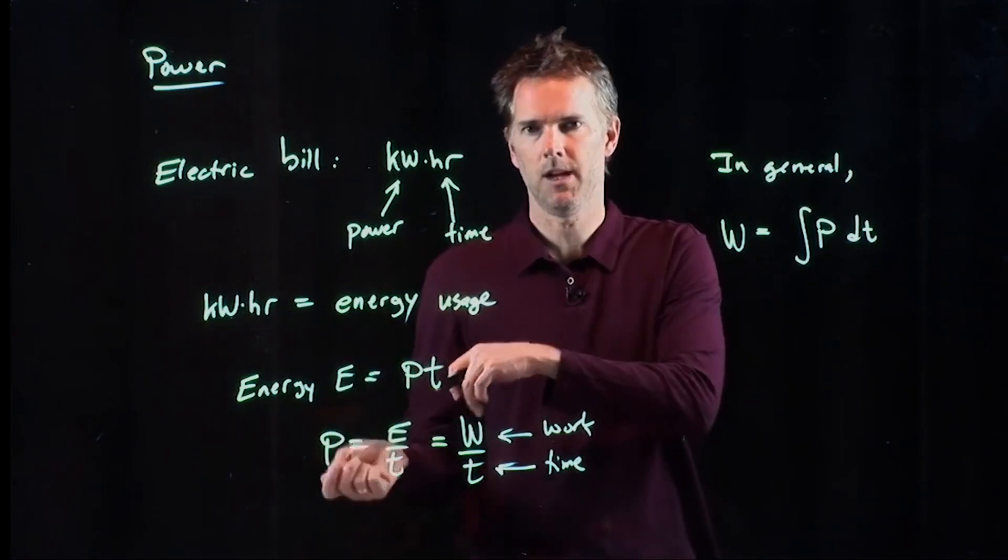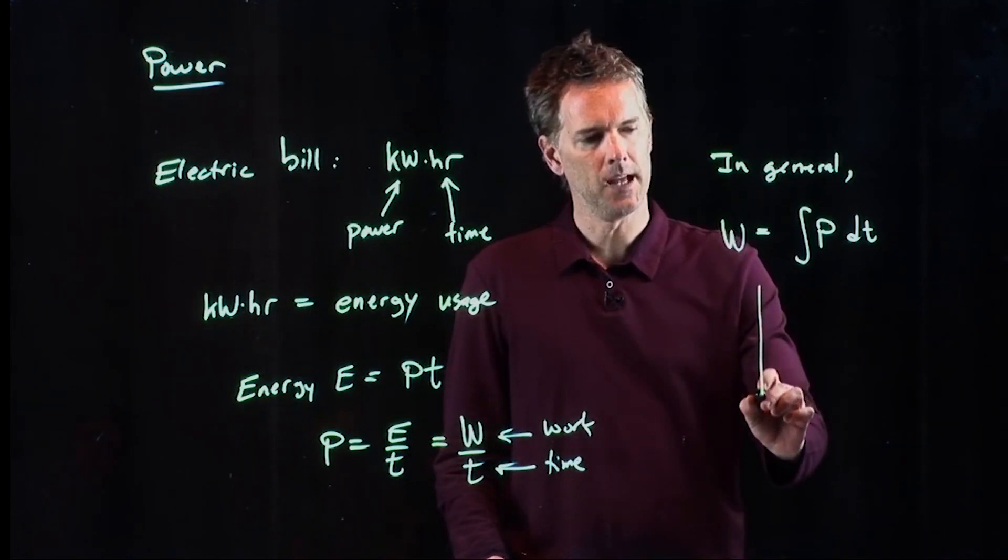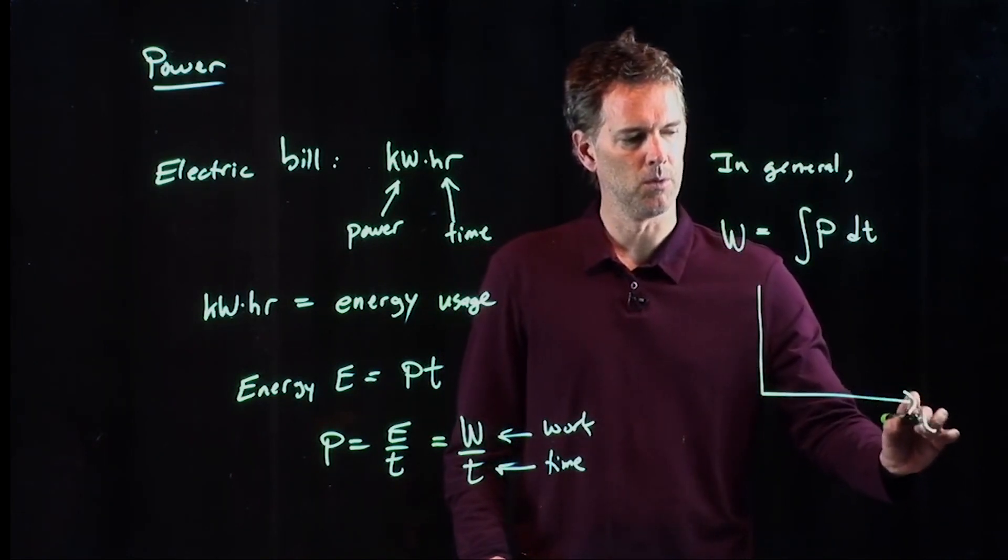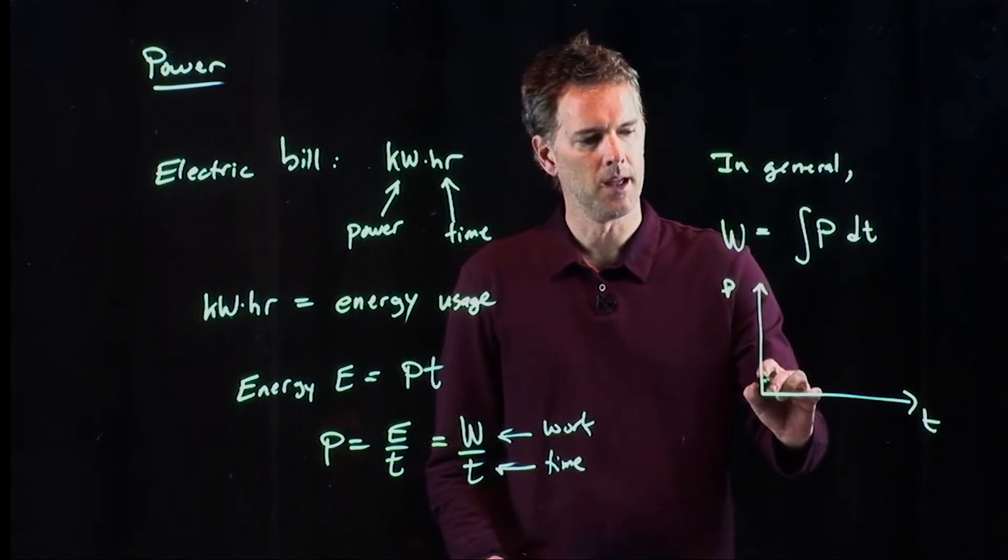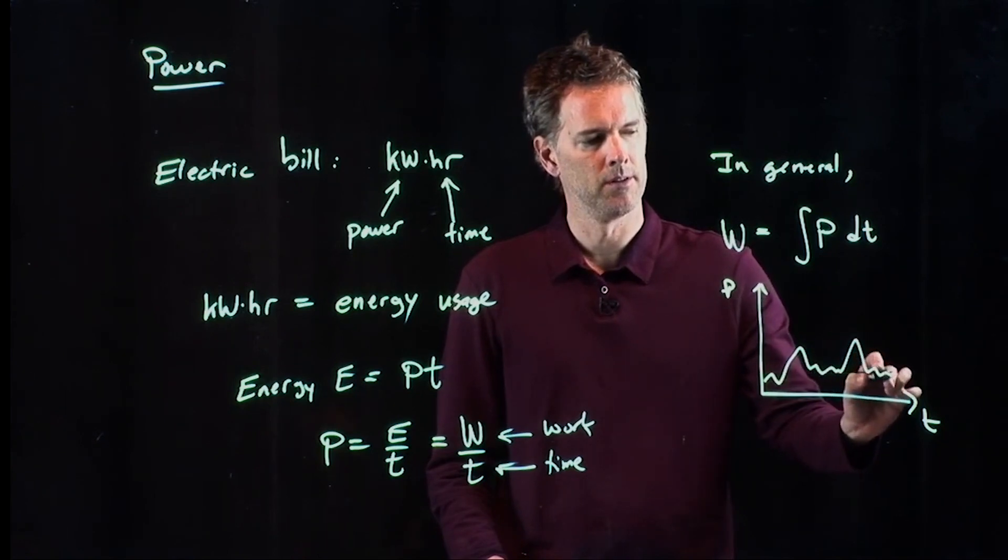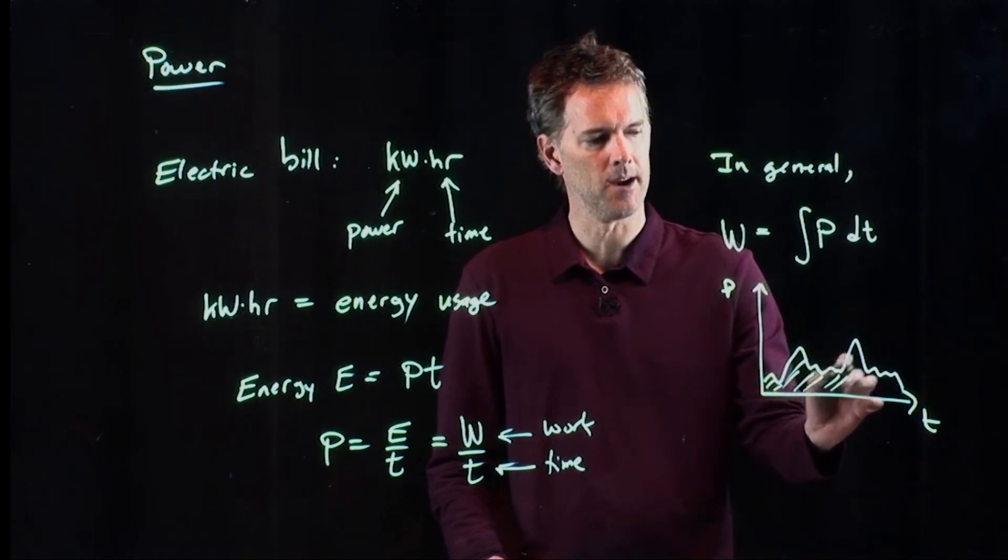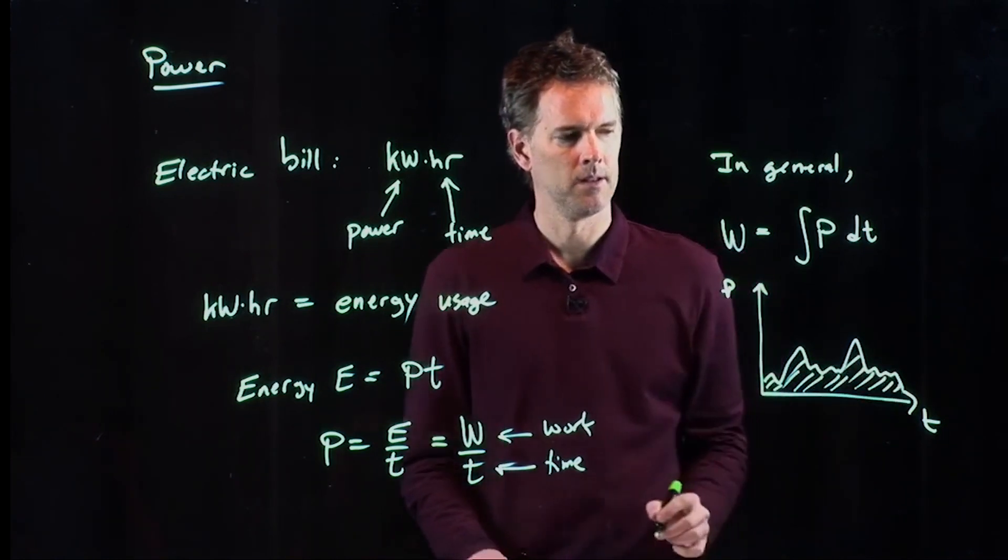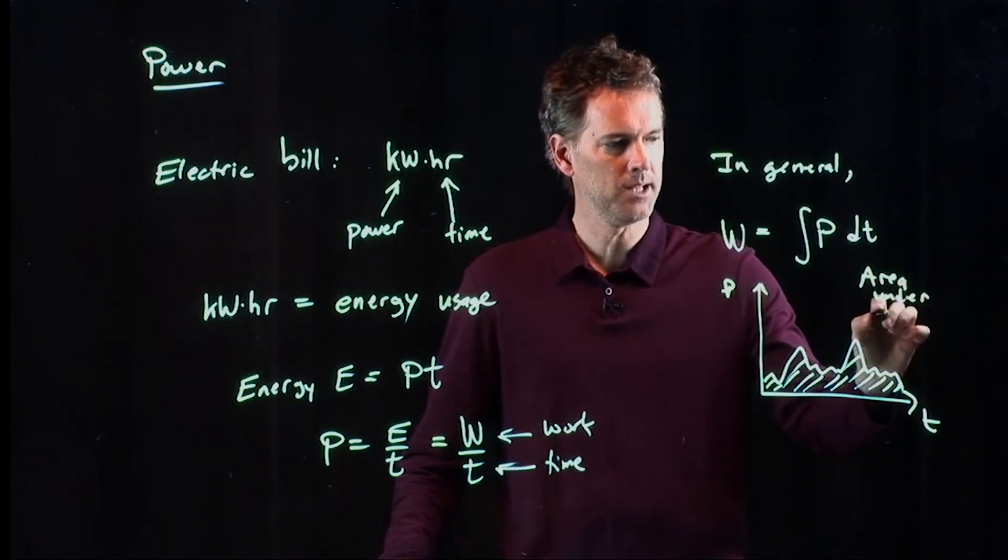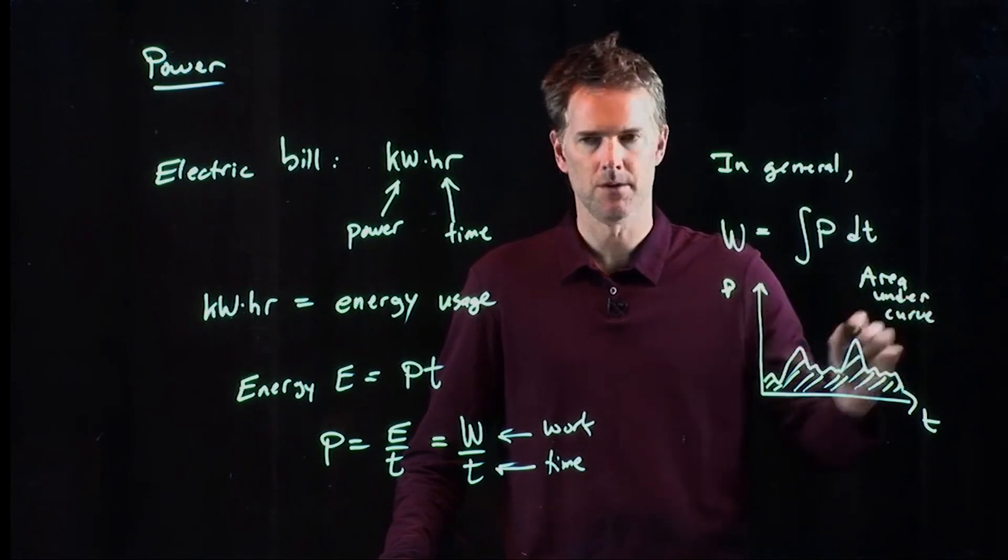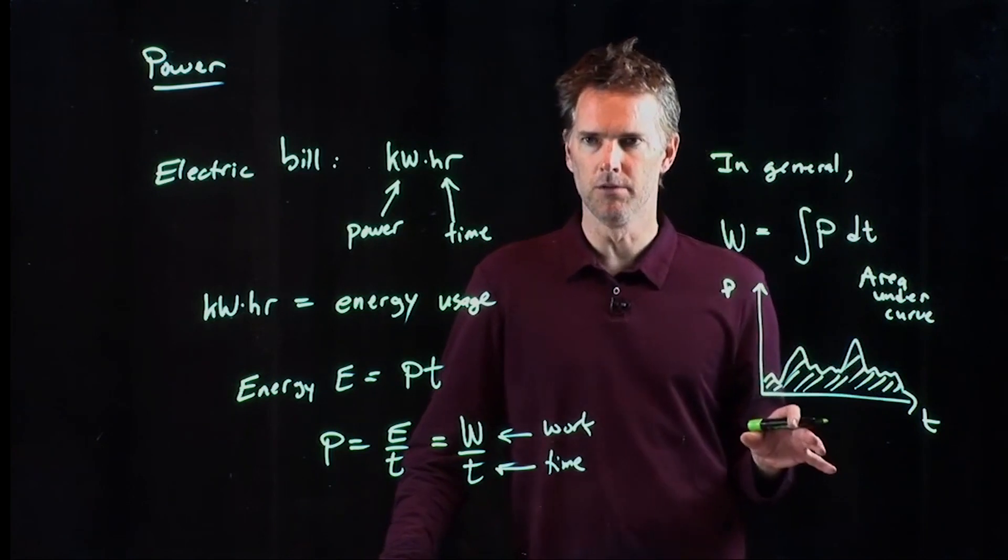So the power is going up and down all the time. And so the energy that you use for the work is going to be the area under the curve. So if I'm integrating for my month, I have to worry about this entire area. This is the area under the curve, and that's really what the utilities measure. They measure that area, they measure that energy that you used for that month.